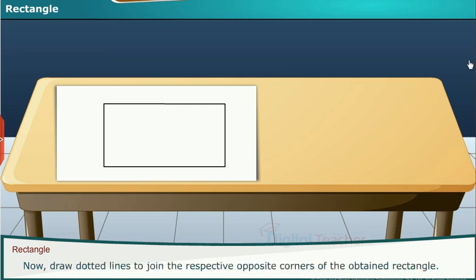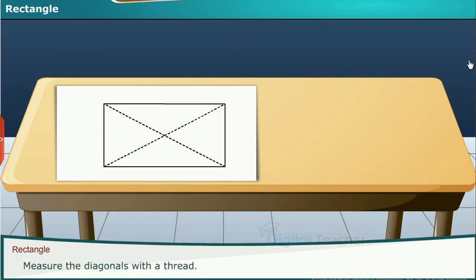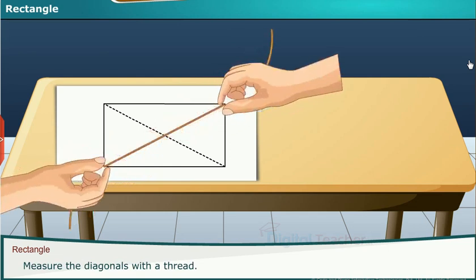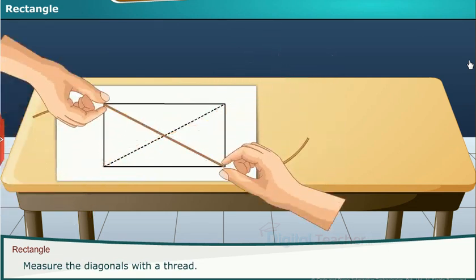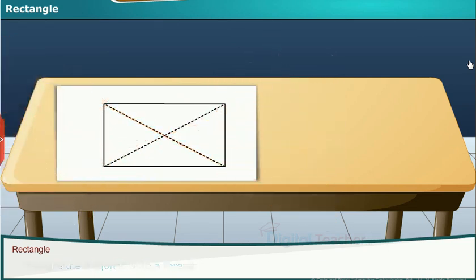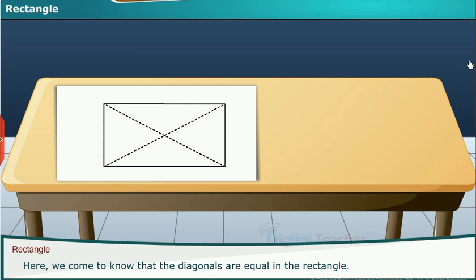Now draw dotted lines to join the respective opposite corners of the obtained rectangle. Measure the diagonals with a thread. Here we come to know that the diagonals are equal in the rectangle.